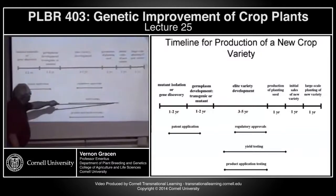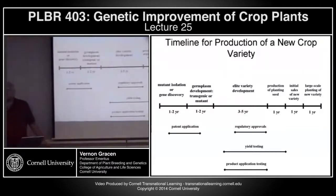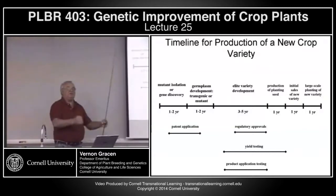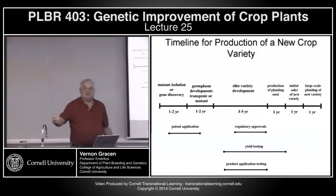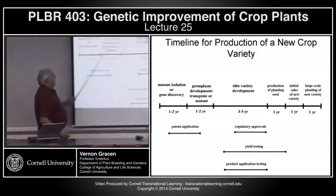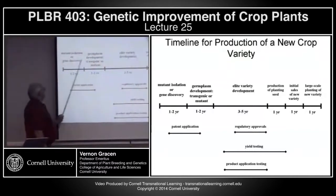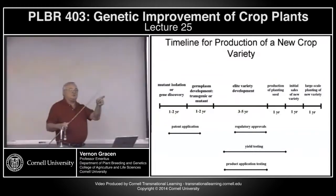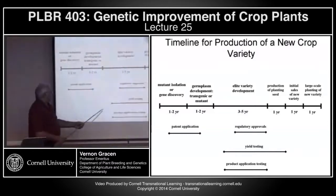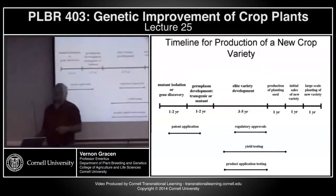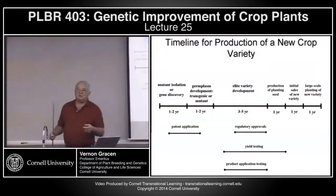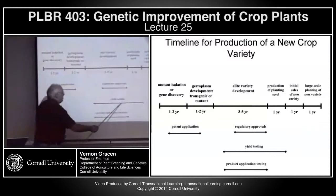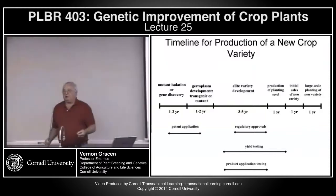Yield testing is probably the major limiting factor in cutting the time to develop new successful varieties. Anyone with interest in the molecular part can work on better technology, better traits, and more efficiency at moving specific traits into crops. But if you could find ways to predict or measure stability of yields over environments in less than five years for a new variety, you could really speed the development of varieties in plant breeding programs worldwide.